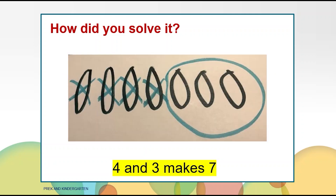Maybe you drew seven counters, crossed four off for the four carrots, and counted three left for the three peppers. Four parts and three parts make seven, which is the whole. There are many ways to solve this problem.